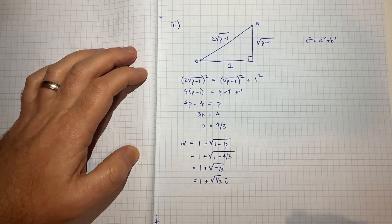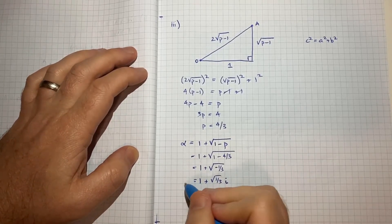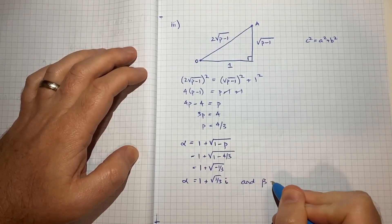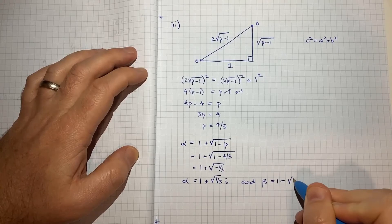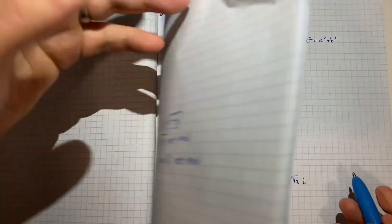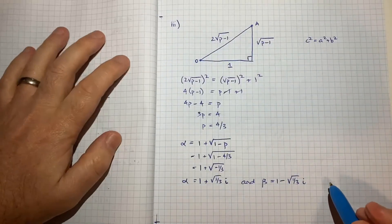And from there we'll get that alpha and we'll get beta as being 1 minus root 1 on 3 times I. Because you may remember beta was the same as alpha, just the minus, but otherwise everything else was the same.